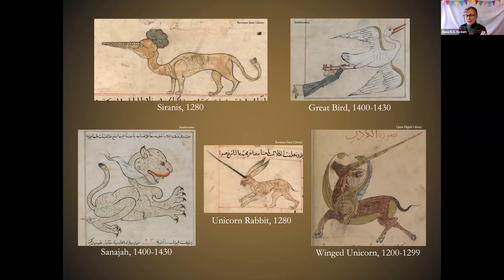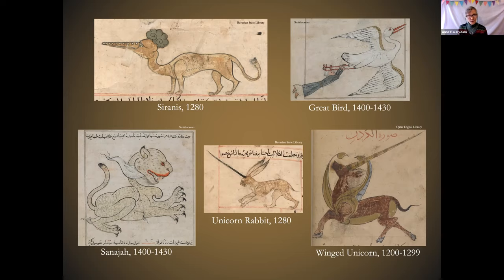That's what the writing in bestiaries was all about. But to get back to Europe — only about five to ten percent of the European population was literate during this period. So you might think that none of this would have much impact, but in fact the percentage of the population exposed to the information and iconography of bestiaries through sermons, art in churches and other public buildings, oral transmission, and so on was much higher — probably nearly universal.